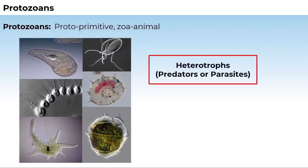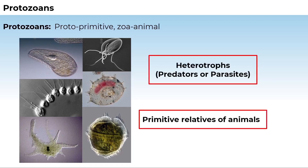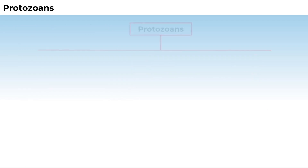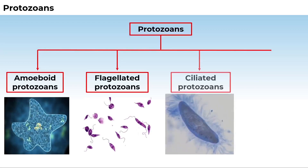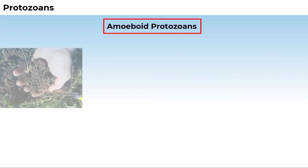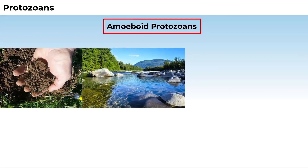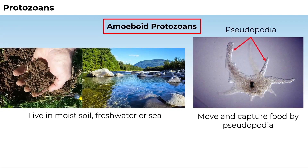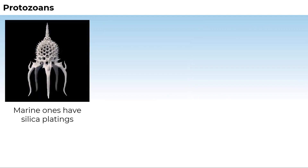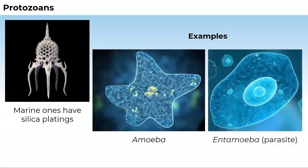All protozoans are heterotrophs and live as predators or parasites. They are believed to be primitive relatives of animals. There are four major groups: amoeboid protozoans, flagellated protozoans, ciliated protozoans, and sporozoans. Amoeboid protozoans live in fresh water, sea water, or moist soil. They move and capture their prey by putting out pseudopodia, known as false feet, as in Amoeba. Marine forms have silica shells on their surface. Examples are Amoeba and Entamoeba, which is a parasite.